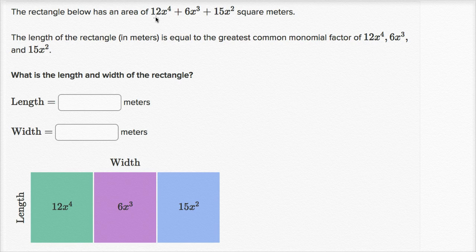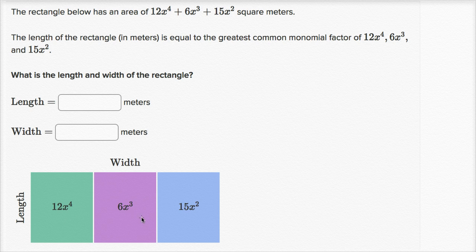The rectangle below has an area of 12x to the fourth plus 6x to the third plus 15x squared square meters. We can see the area broken up: this green area is 12x to the fourth, this purple area is 6x to the third, and this blue area is 15x squared. Add them all together and you get the entire rectangle, which is the combined area: 12x to the fourth plus 6x to the third plus 15x squared.